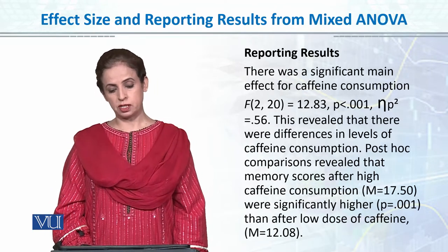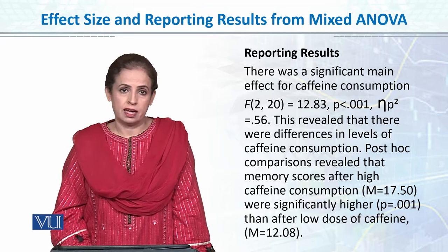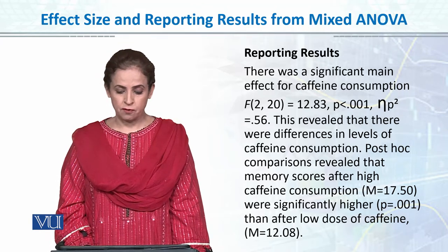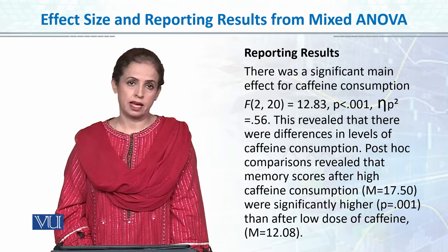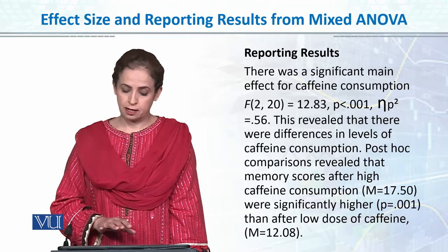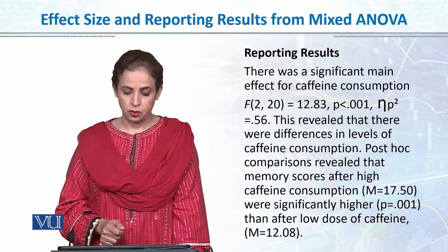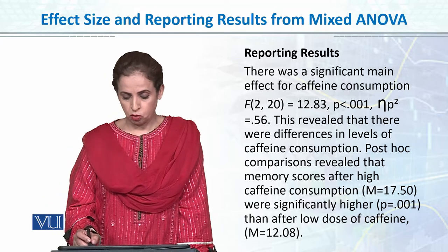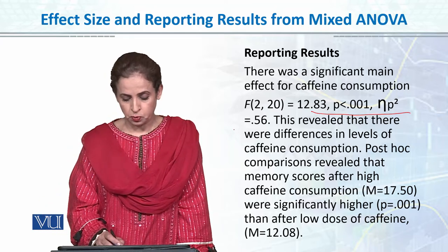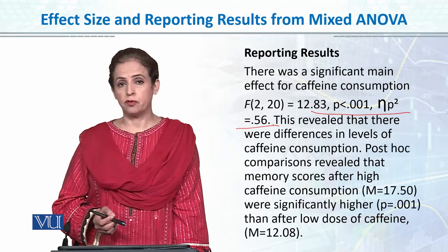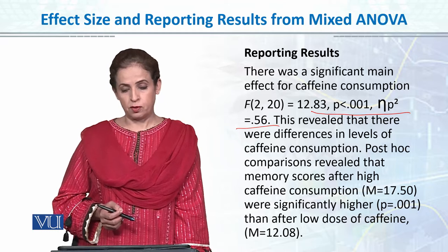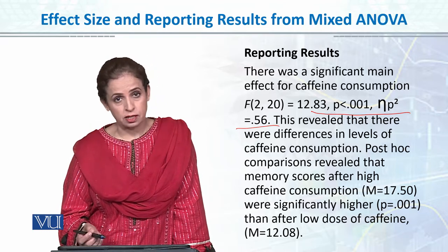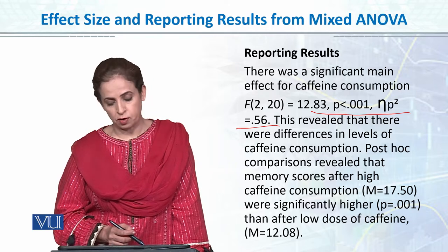Then we report the main effects — first the within-subjects variable. There was a significant main effect of caffeine consumption, F with degrees of freedom, F = 12.83, p < 0.01, partial eta square = 0.56. This revealed that there were significant differences in the levels of caffeine consumption.